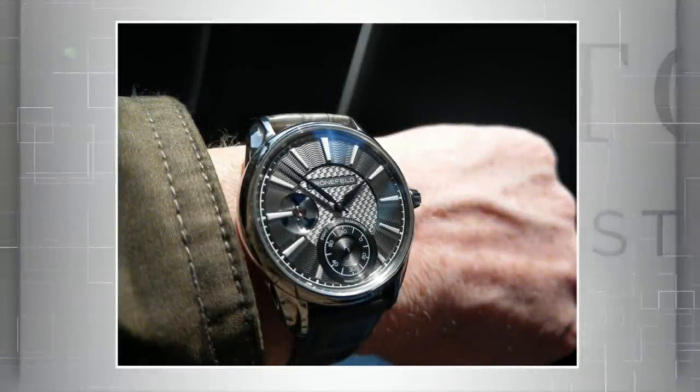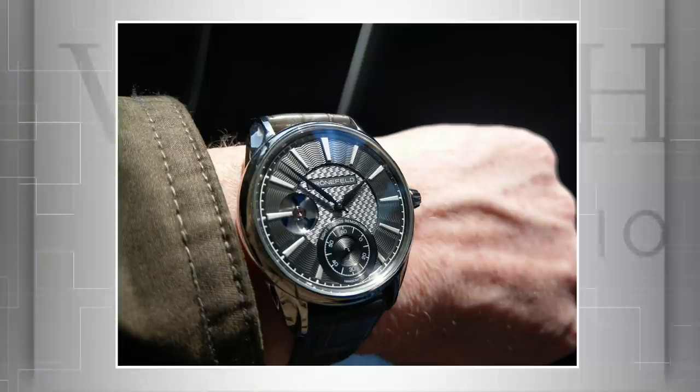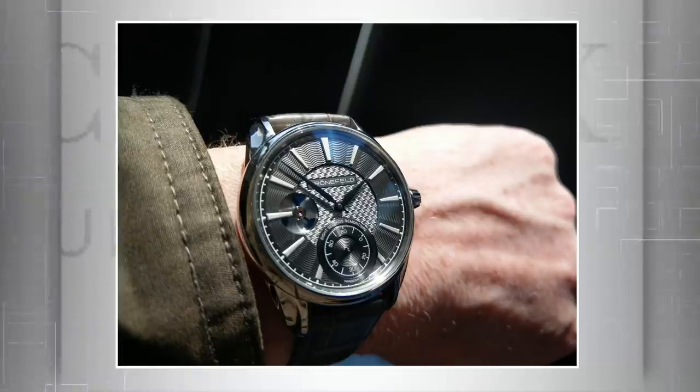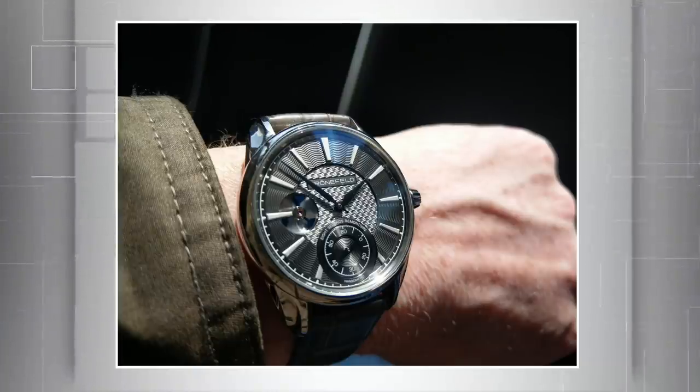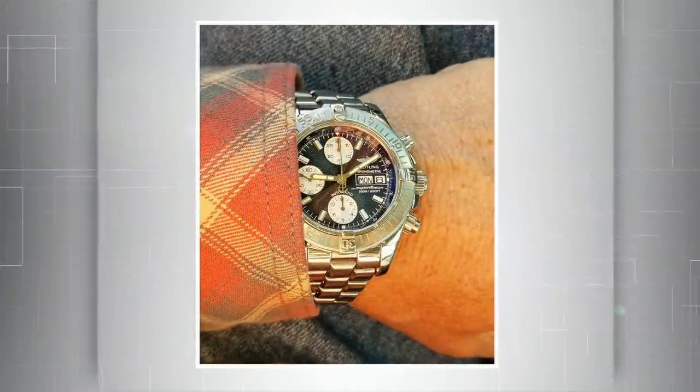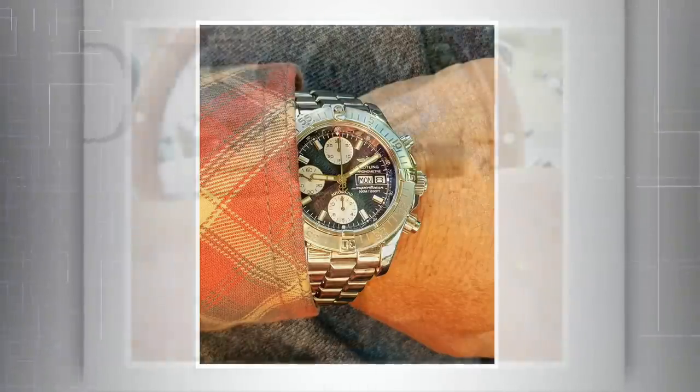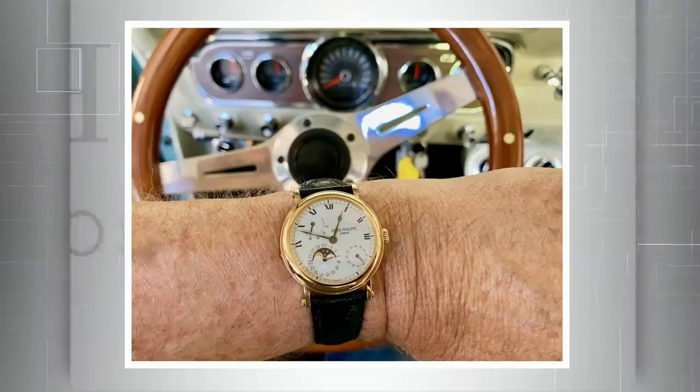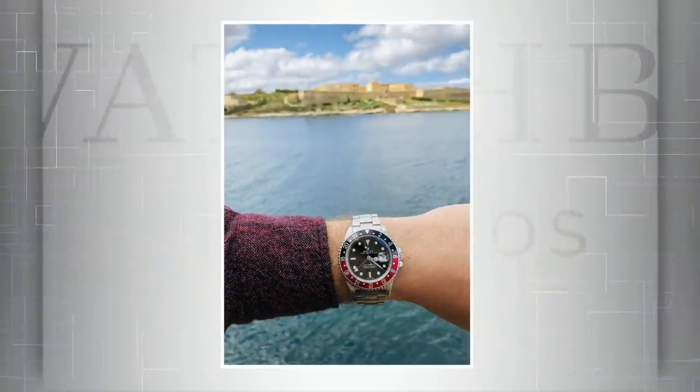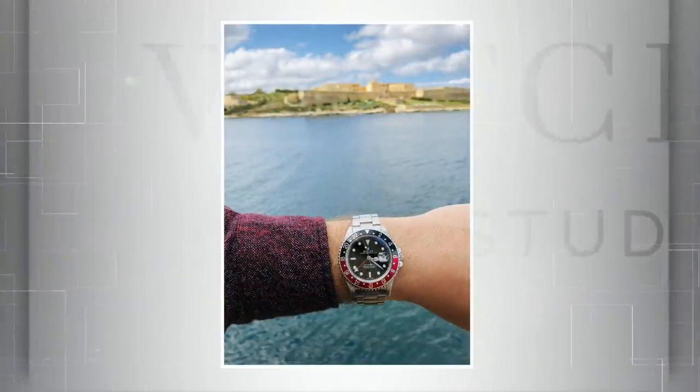Jumping straight in with Matt F debuting the first ever Grönefeld on the show, a Remontoire Eight Second with a Voutilainen dial. Kenneth M is in the spirit of spring with his Breitling Superocean Chronograph, and Doug Y of California goes the watches and wheels route with his 1965 Mustang and Patek 5054. Glenn Z joins us from Fort Manoel in Malta with his Rolex GMT Master II.